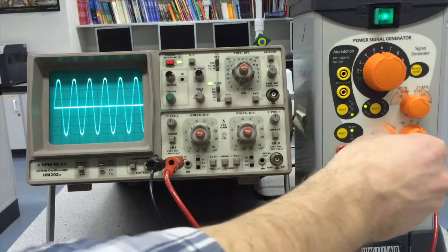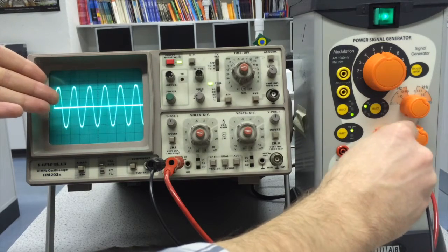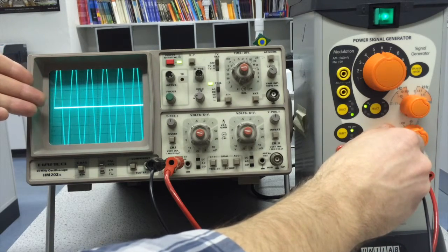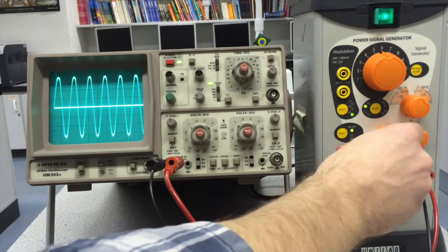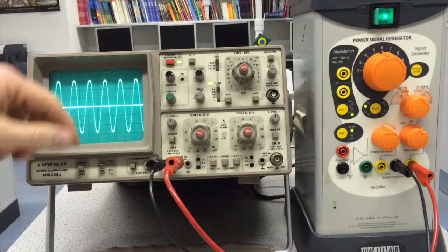And then if I reduce the amplitude you can see the amplitude of the wave gets smaller, and increase the amplitude then the amplitude gets larger on the display.